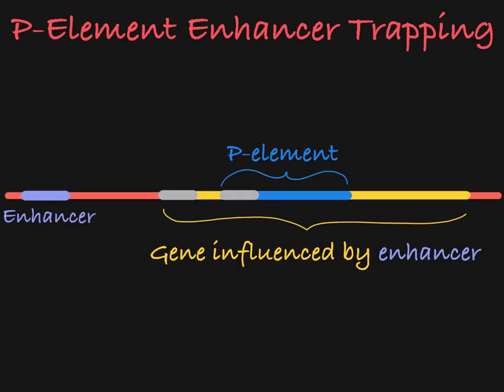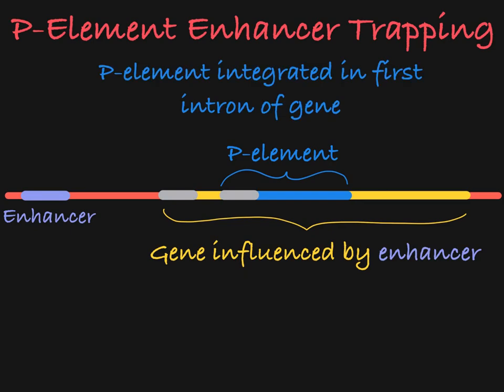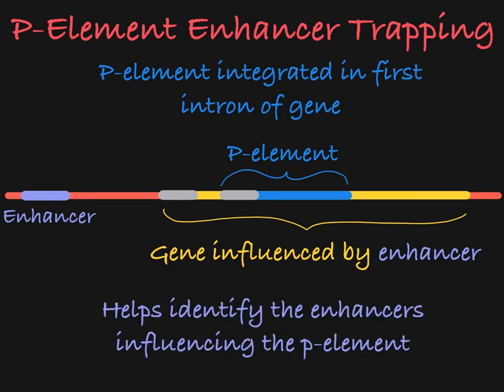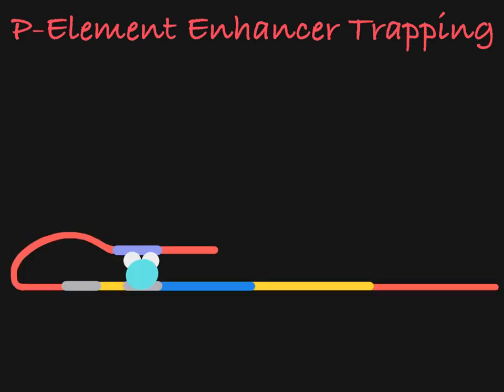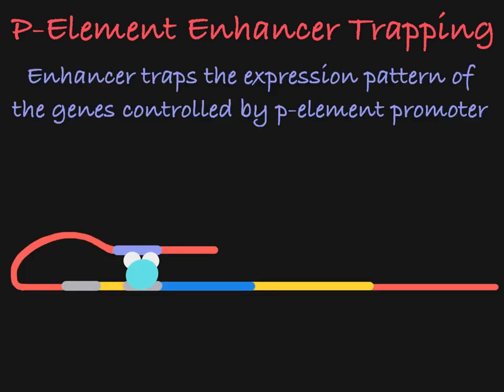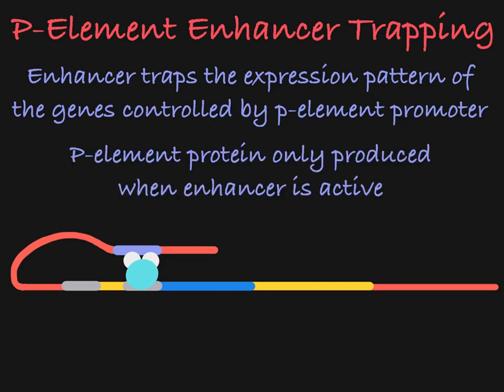In flies, P element insertion often occurs in the first intron of a gene. When this happens, this can help identify the enhancers associated with the newly inserted P element. This is enhancer trapping. The enhancer traps the expression cassette of the P element, influencing the expression of the genes controlled by the P element promoter. In this way, the genes of the P element are only expressed according to the specific expression pattern dictated by the trapped enhancer.